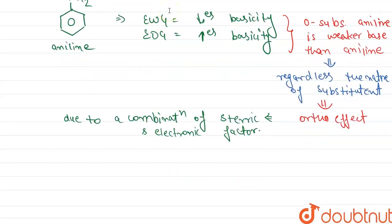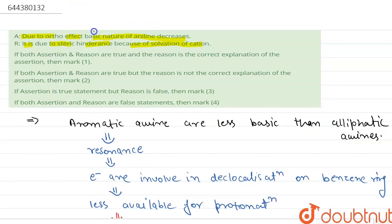Now applying this to the question: the assertion that due to the ortho effect the basic nature of aniline decreases is true. The reason — that it is due to steric hindrance because of the solvation of the cation — is also true, since the ortho effect is a combination of steric and electronic factors. The reason is the correct explanation for the assertion, so the correct answer is option one.